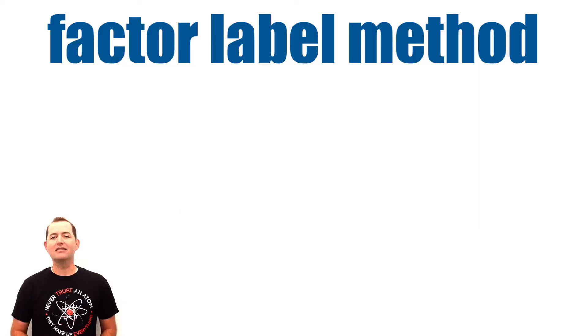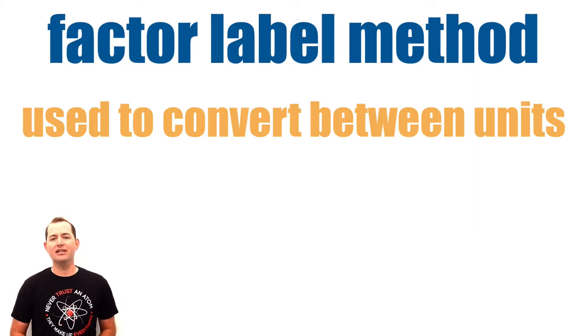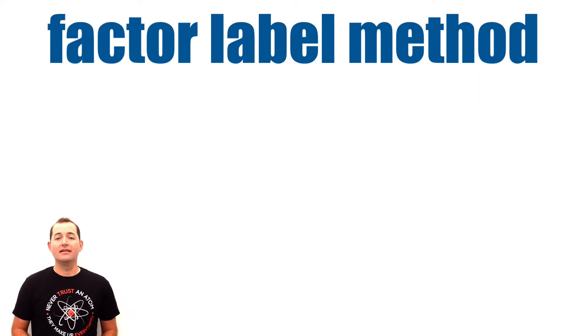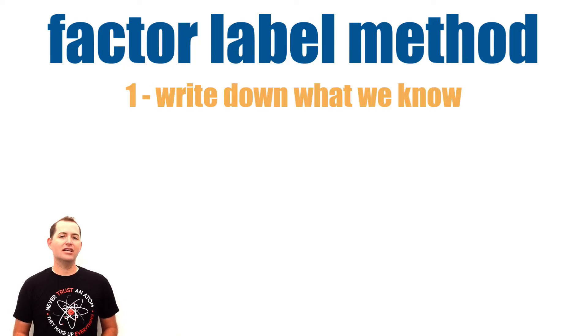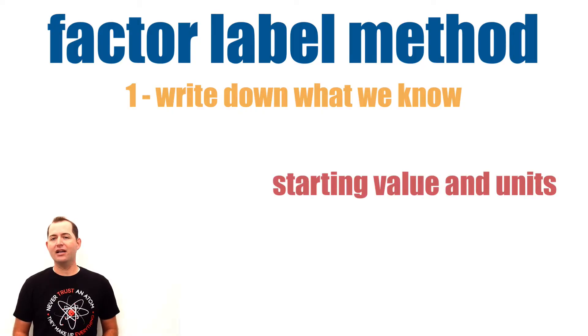The factor label method is commonly used to convert between units in math and science. The steps that we follow are first, write down what we know. This usually includes our starting value and units and the units that we need to end with.